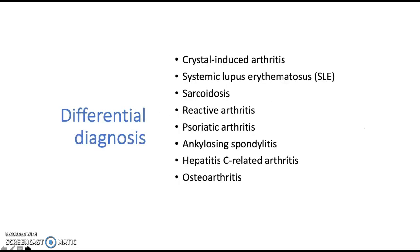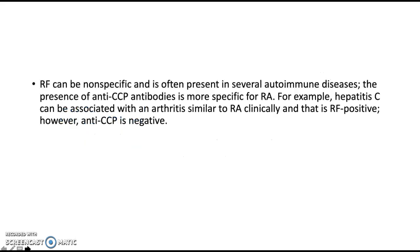The differential diagnosis of rheumatoid arthritis includes crystal-induced arthritis such as gout, systemic lupus erythematosus, sarcoidosis, reactive arthritis, psoriatic arthritis, ankylosing spondylitis, hepatitis C-related arthritis, and osteoarthritis. Rheumatoid factor can be nonspecific and is often present in several autoimmune diseases, whereas the presence of anti-CCP antibodies is more specific for rheumatoid arthritis.